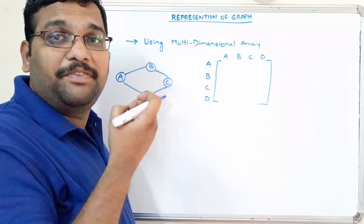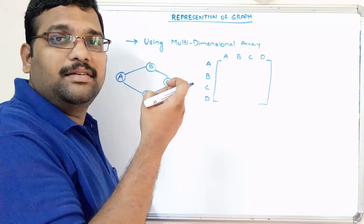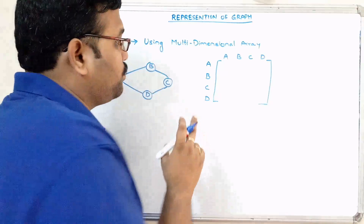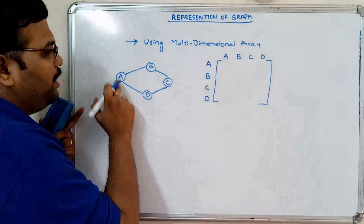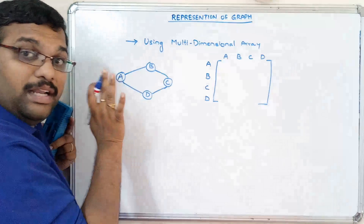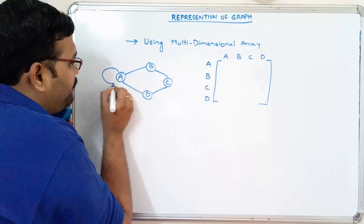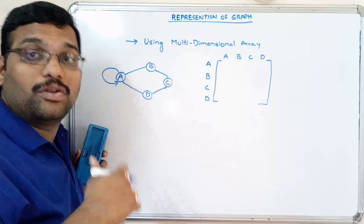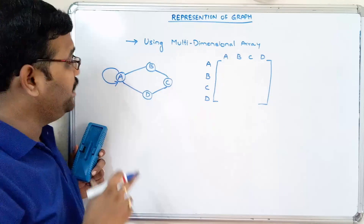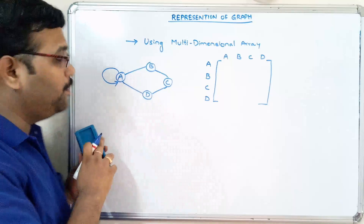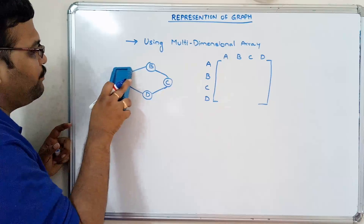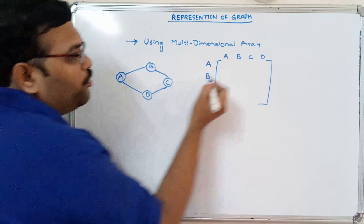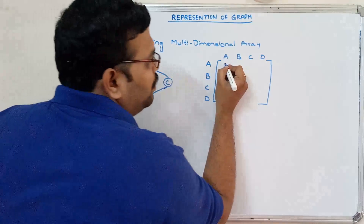Now we have to fill this multidimensional array with zeros and ones. If an edge between two vertices is available, that cell will be filled with one; otherwise it will be filled with zero. There is also the possibility of a self-loop — for example, A can have a self-loop. But in this example it doesn't have any self-loop, so A to A is filled with zero.